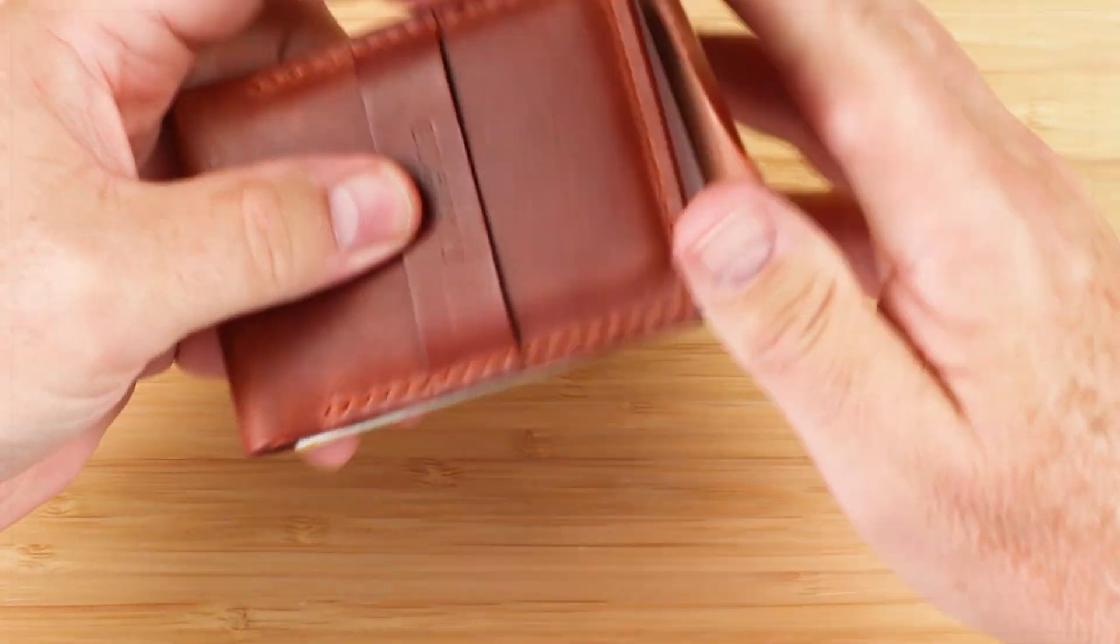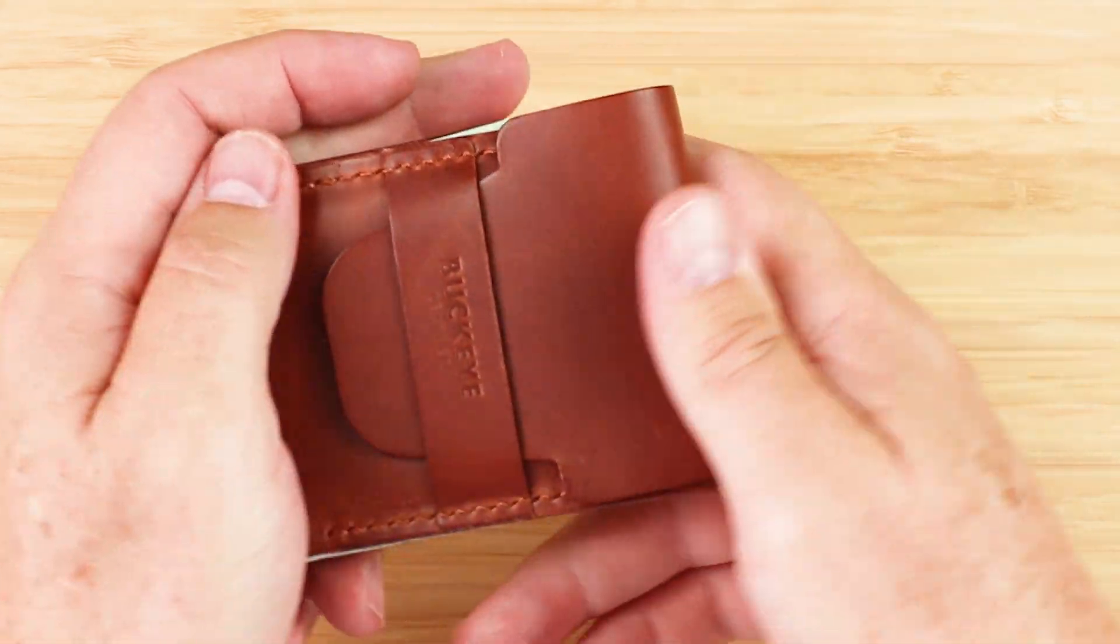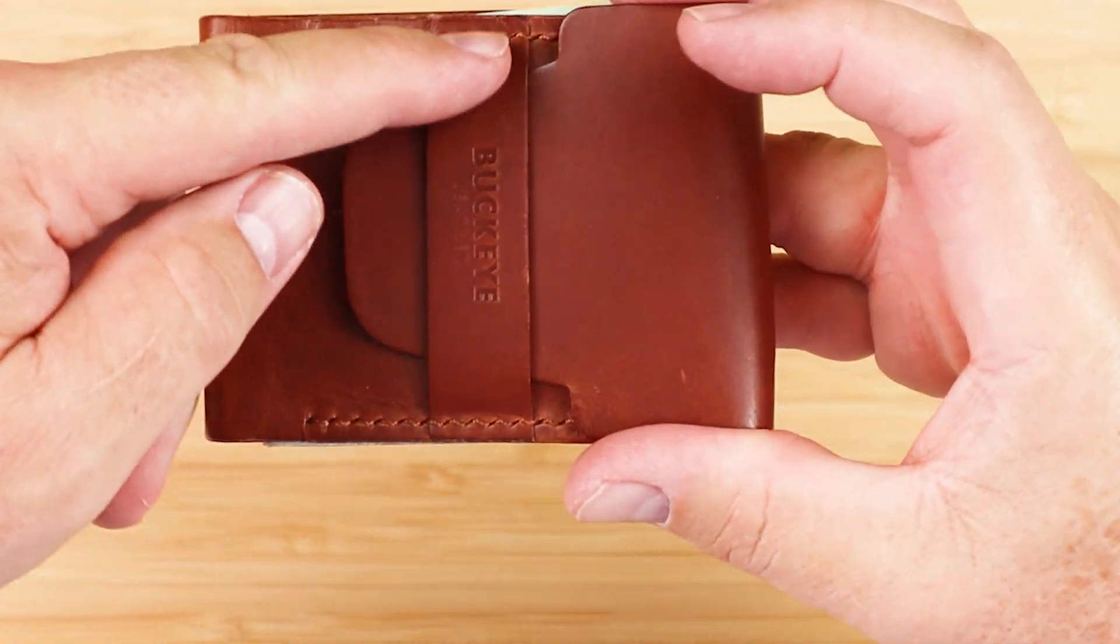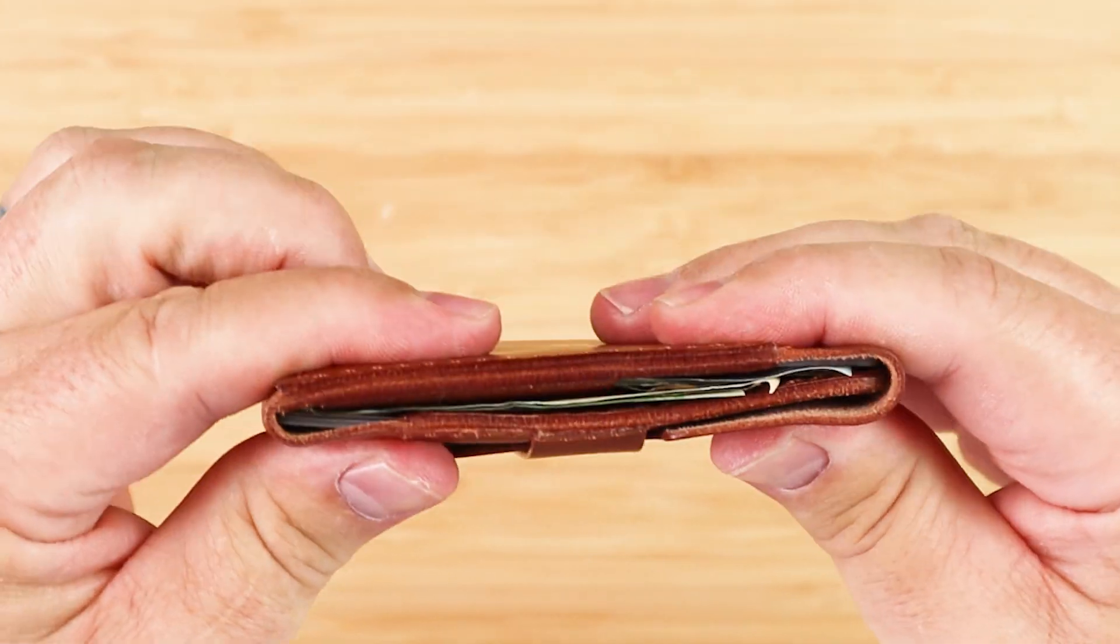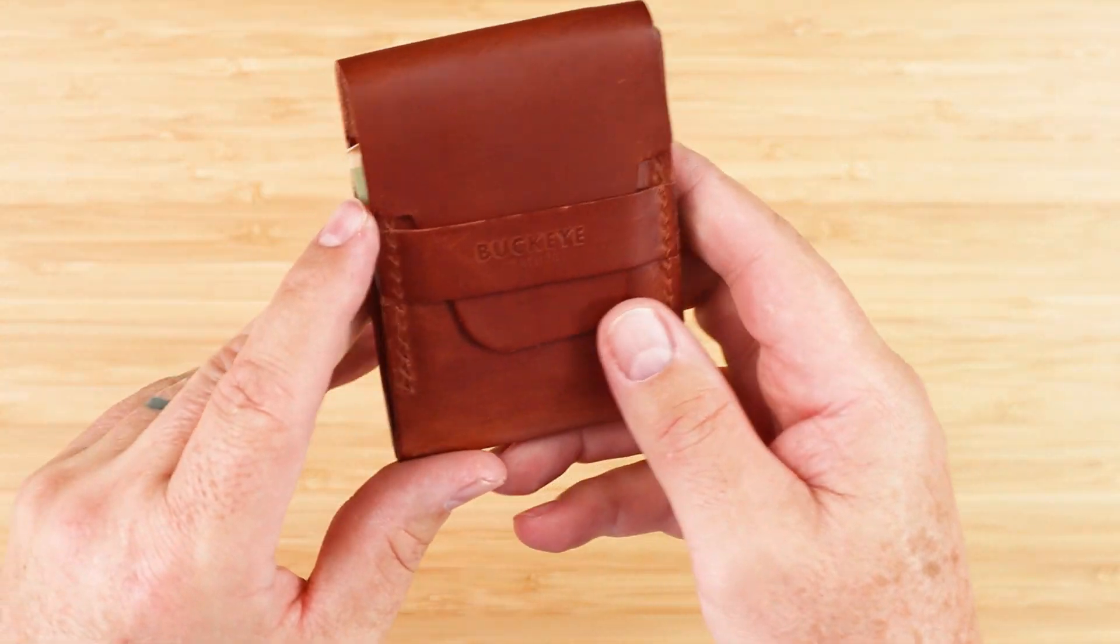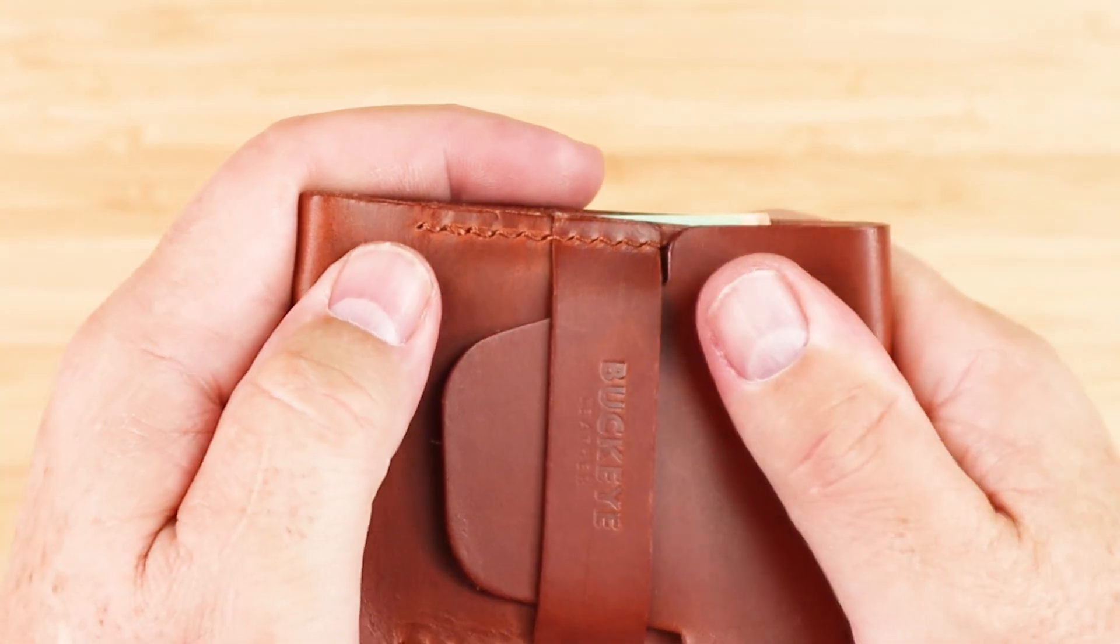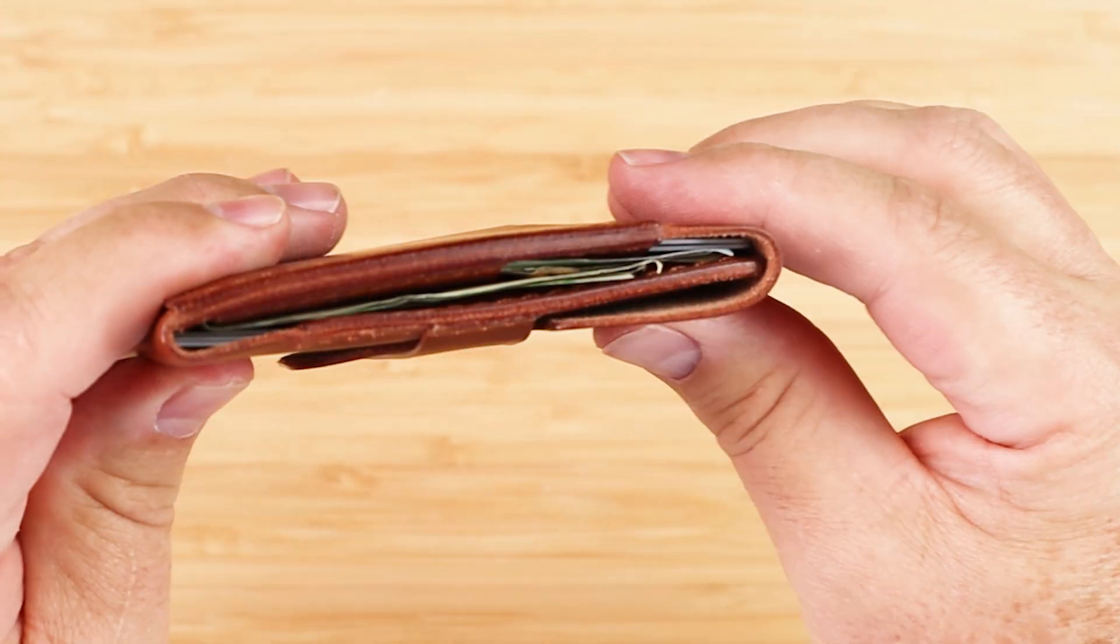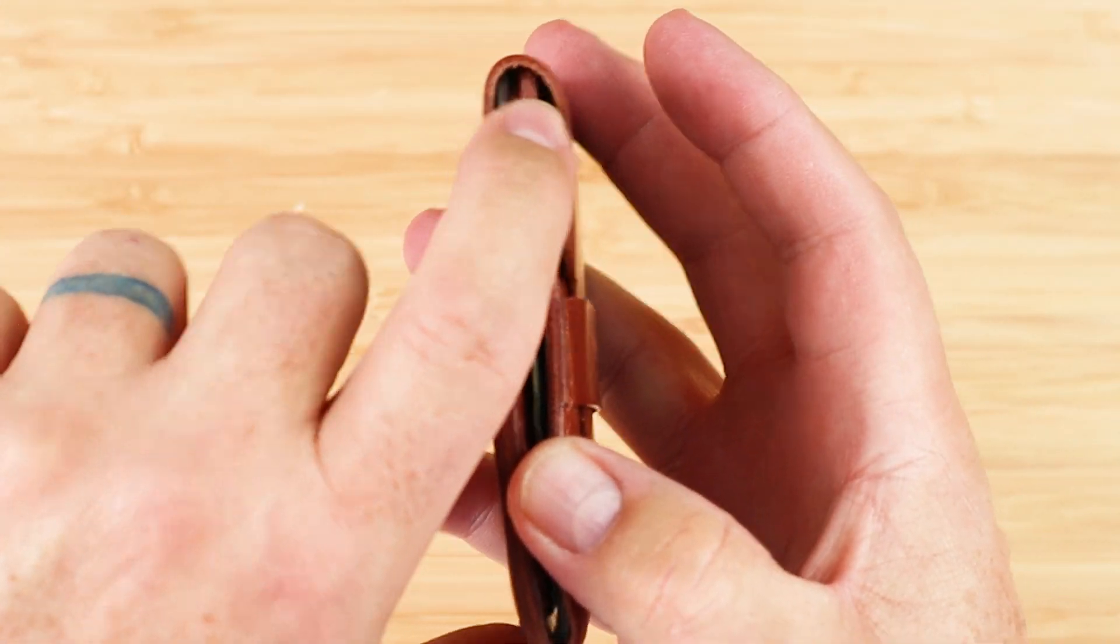But when you wrap this up and you put this in, you begin to see how it begins to pull. And so you need a deeper flap here to accommodate more cash, if that's what you like to carry. And then you've got these sides that act as a stop in case you don't want to push this so far down that it pulls everything too tight.